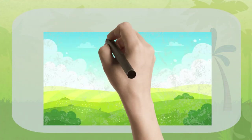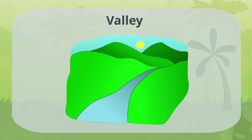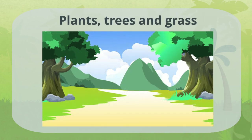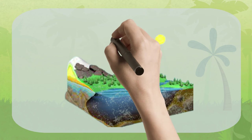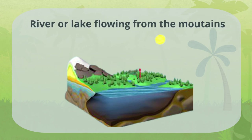Hills are mostly covered in trees, plants, grass, and moss. Valley: A valley is a low part of the ground between mountains or hills. Valleys are usually covered with beautiful plants, trees, and grass, and are often covered by water in the form of a river or lake flowing from the mountains.